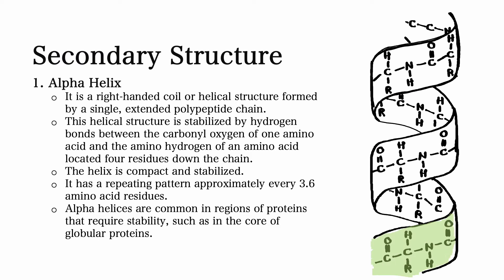Alpha helices are right-handed coils or helical structures formed by a single extended polypeptide chain. This helical structure is stabilized by hydrogen bonds between the carbonyl oxygen of one amino acid and the amino hydrogen of an amino acid located four amino acid residues down the chain.